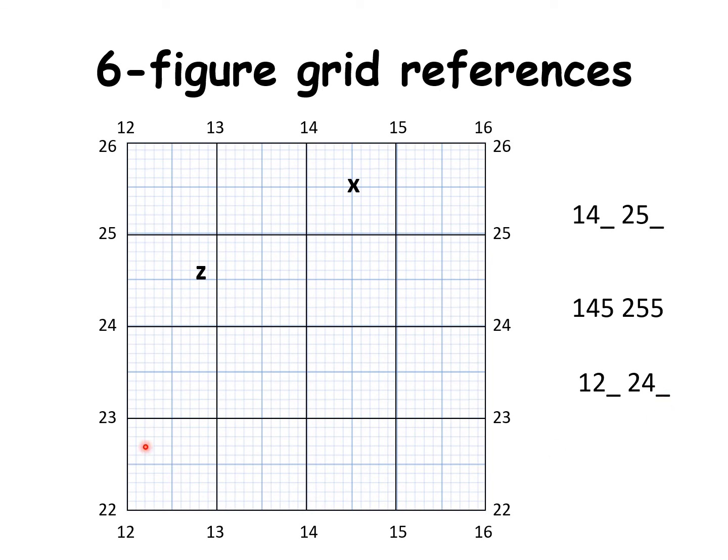Let's see what happens. So between 12 and 13, we're splitting it into another 10 divisions. 1, 2, 3, 4, 5, 6, 7. And it's about 8 across. So we put the 8 there.